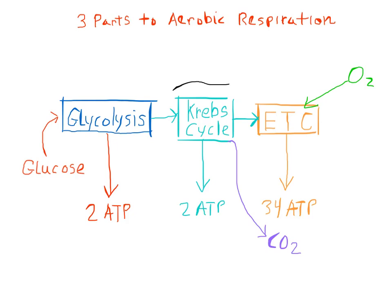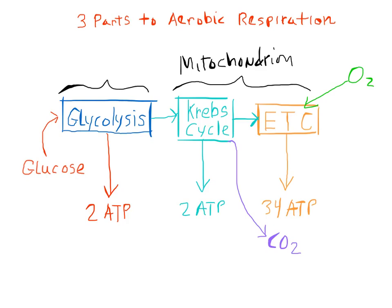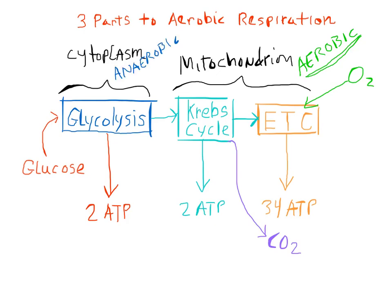Both the Krebs cycle and the electron transport chain happen in the membrane-bound organelle known as the mitochondrion, while glycolysis happens in the cell's cytoplasm. So no organelle is needed for glycolysis. Since both the Krebs cycle and the electron transport chain happen in the mitochondrion, we'll consider them both aerobic, while glycolysis happening in the cytoplasm does not use oxygen and we will refer to it as an anaerobic process.